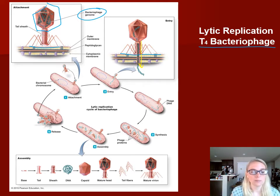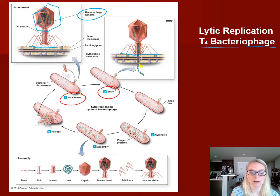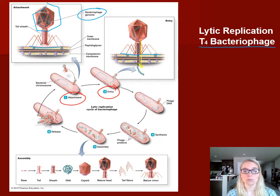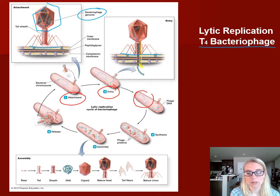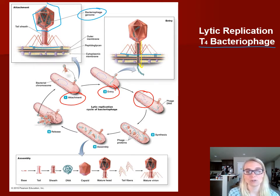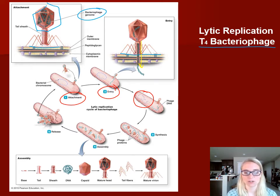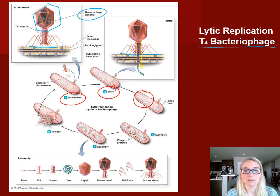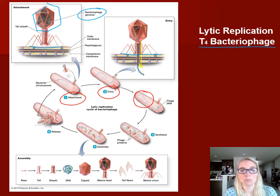The first step in this cycle is attachment, and then entry — the hypodermic injection of the genome into the bacteria. Then there's a trigger in the cell with the arrival of this phage DNA — phage being a shortened abbreviation for bacteriophage. What happens is the host chromosome gets broken apart. We saw this back in Chapter 7 in the transduction method of horizontal gene transfer, where some of that bacterial genome accidentally gets incorporated into the bacteriophage — that's how that happens. But once the phage DNA is in the cell and the host chromosome is degraded, there's nothing left for the bacterial replication machinery to do but replicate the phage itself.